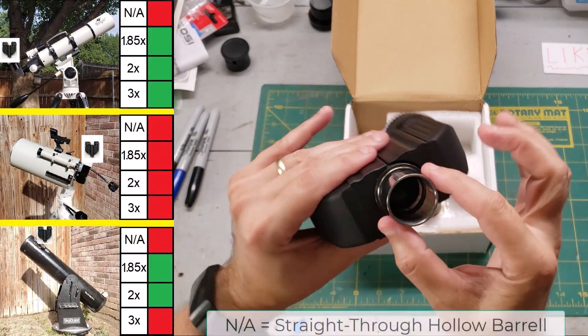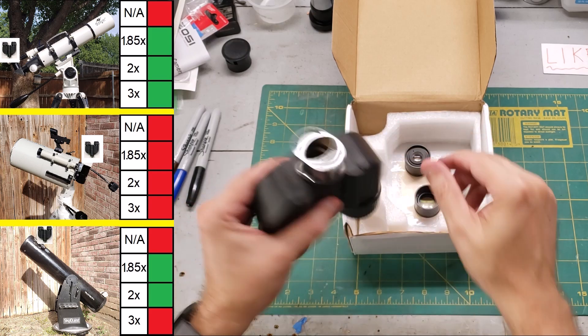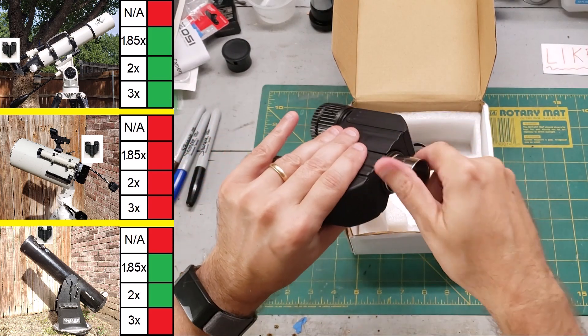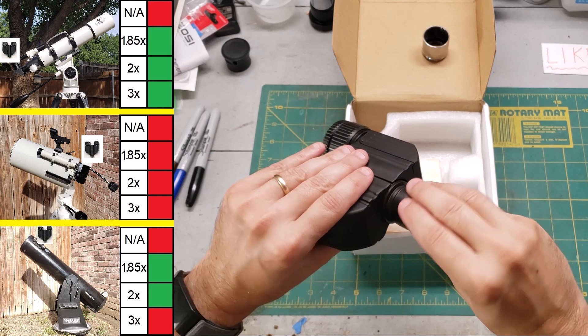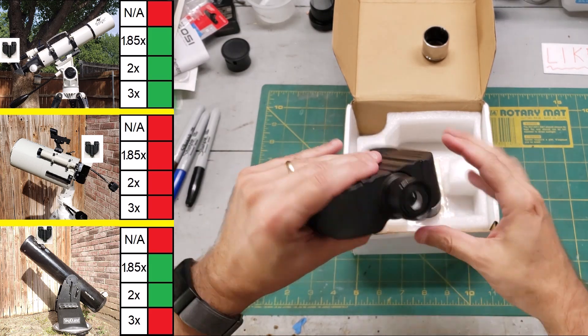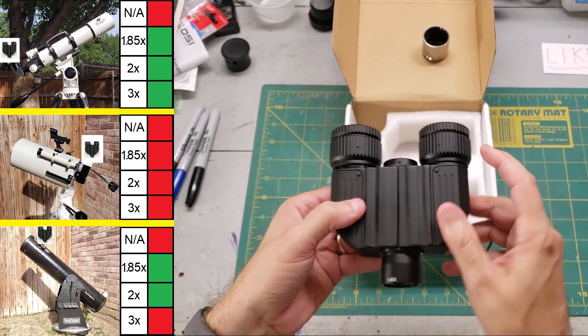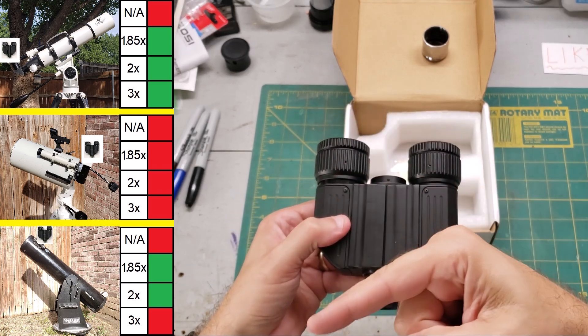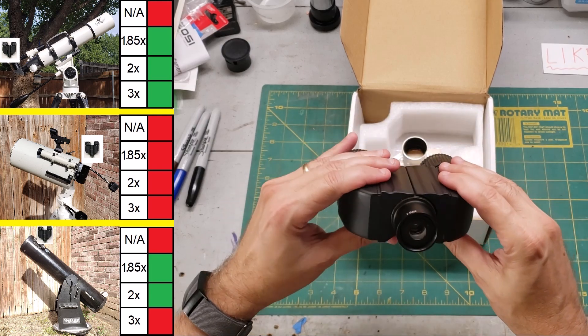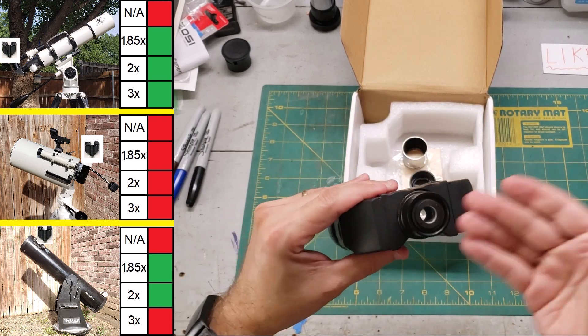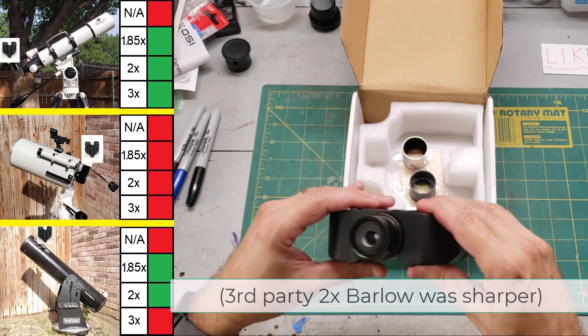The straight through barrel didn't work on any of my telescopes, but then I decided to attach the 1.85X. And of course, this is a different thread. It won't go in there. I don't know why they made those different, but that's okay. So you unscrew the regular straight through barrel and you attach the 1.85X like that. And this worked on two of my telescopes. By the way, I was using 20 millimeter eyepieces. The two telescopes that it worked on were the refractor telescope and the 8 inch Dobsonian telescope, but it did not work on the MAC CAS. In fact, even when I tried the 3X, it didn't work on the MAC CAS.